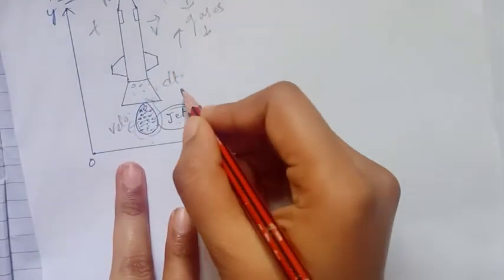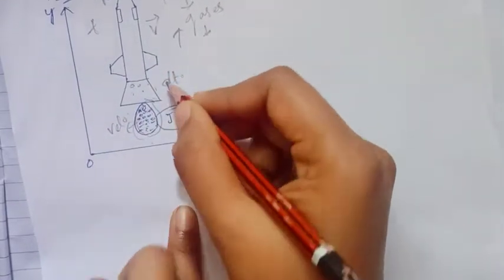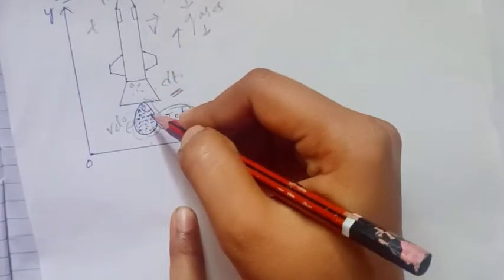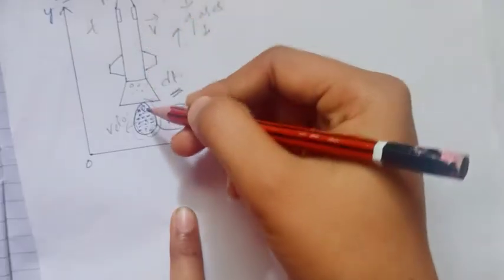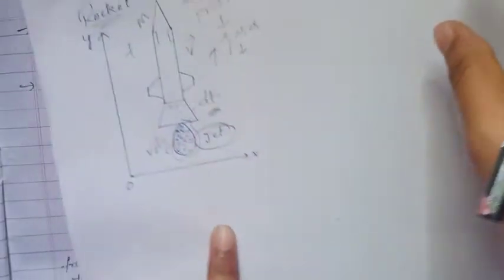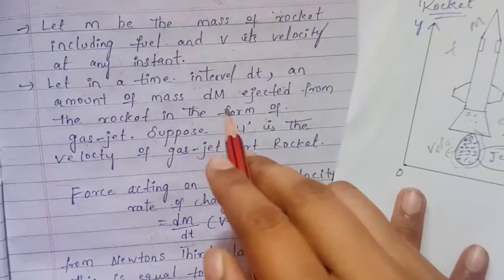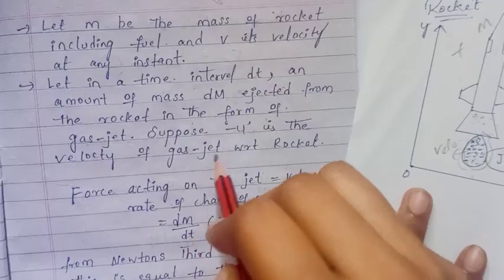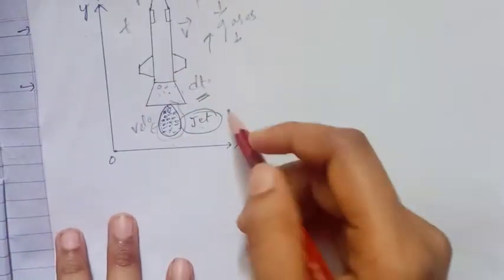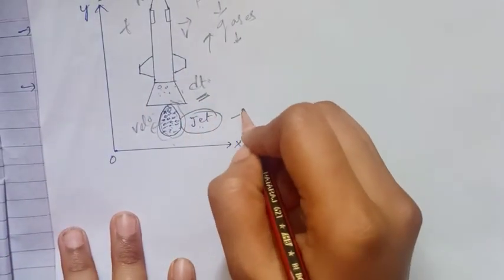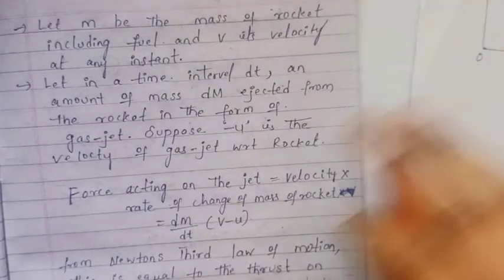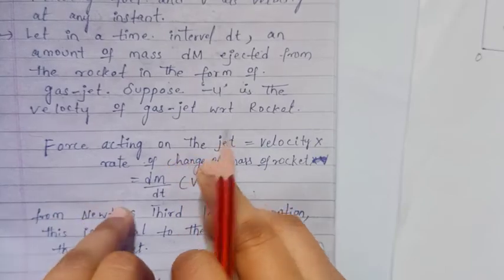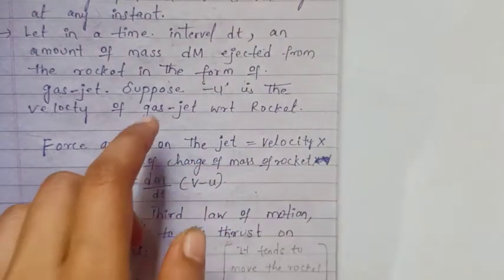After a time interval dt, we consider the gas jet ejected from the rocket. Suppose u is the velocity of the gas jet with respect to the rocket, so the gas jet velocity relative to the ground is v minus u.